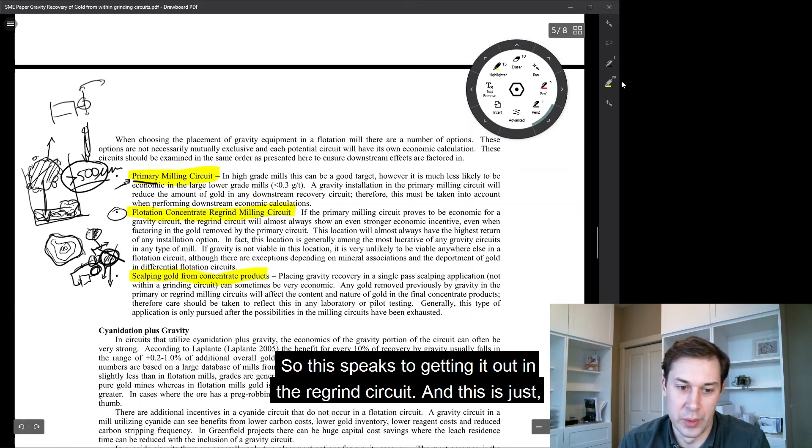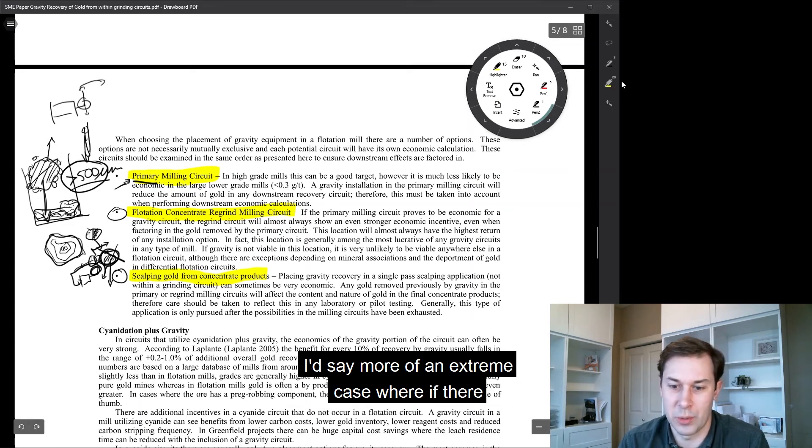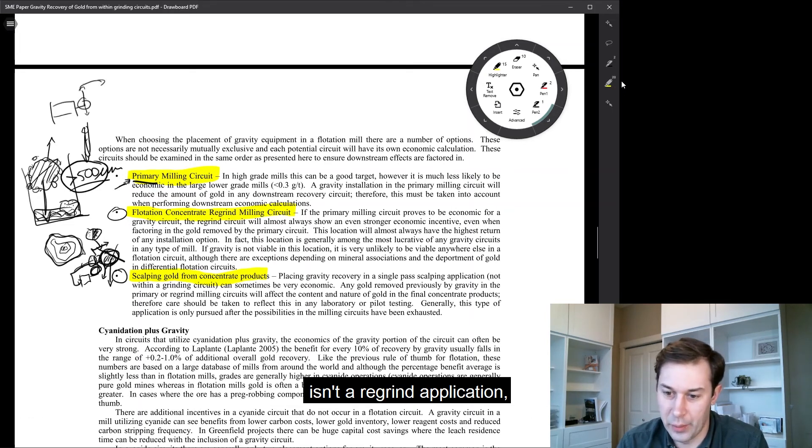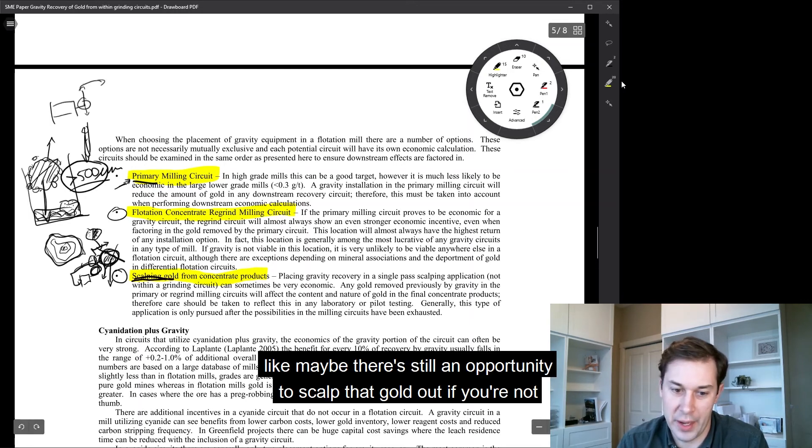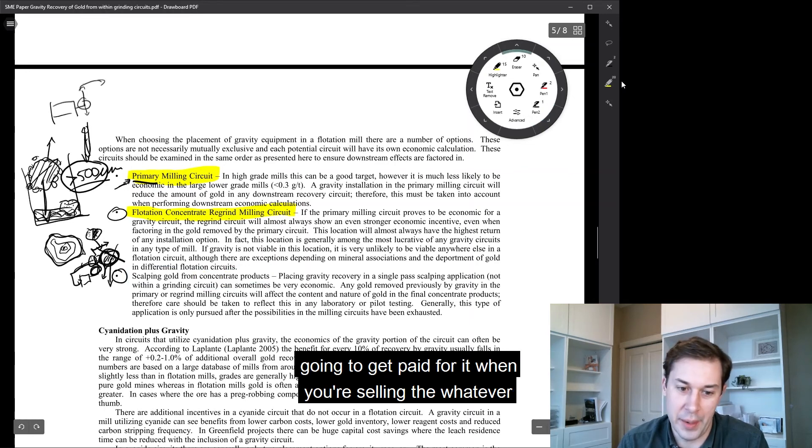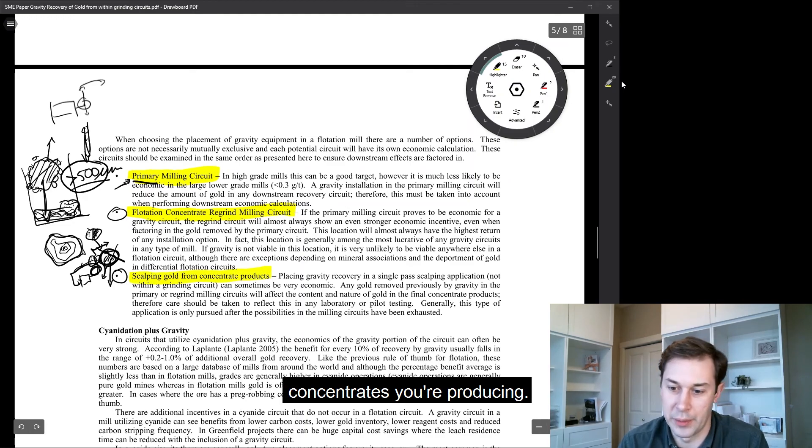So this speaks to getting it out in the regrind circuit. And this is, I'd say, more of an extreme case where if there isn't a regrind application, like maybe there's still an opportunity to scalp that gold out if you're not going to get paid for it when you're selling the whatever concentrates you're producing.